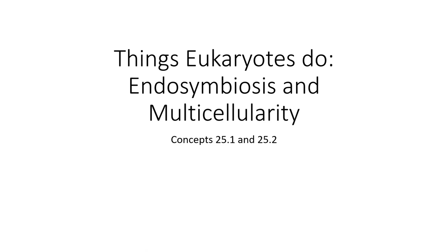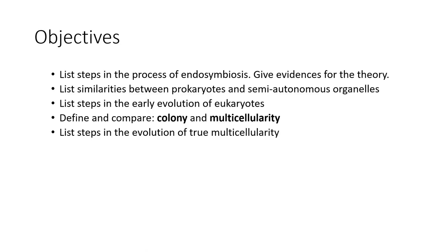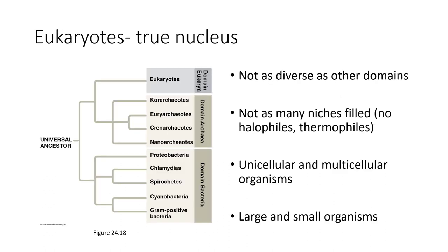If living things can do it, prokaryotes are probably doing it. Here are two exceptions: endosymbiosis and multicellularity. List steps in the process of endosymbiosis. Give examples and evidence for the theory. List similarities between prokaryotes and semi-autonomous organelles. List steps in the early evolution of eukaryotes. Be able to define and compare colony and multicellularity, and be able to list steps and things necessary for the evolution of true multicellularity.